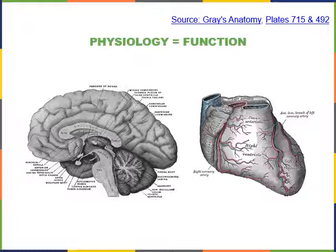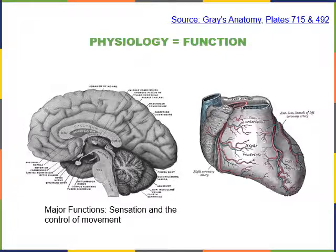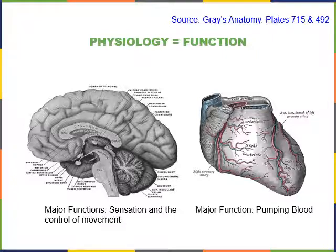Modern research has led us to a different perspective, showing that the function of the brain is sensation and the control of movement. The heart is important for pumping blood throughout the body — providing nutrients to cells and removing waste. The heart's pumping action can be demonstrated when someone has a heart attack and their heart stops beating, causing pressure inside blood vessels to decrease and blood to stop being pumped through the body.